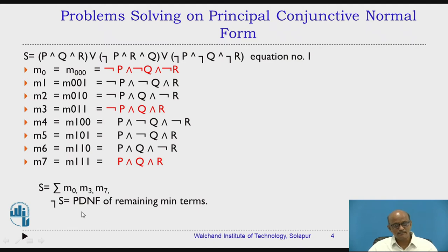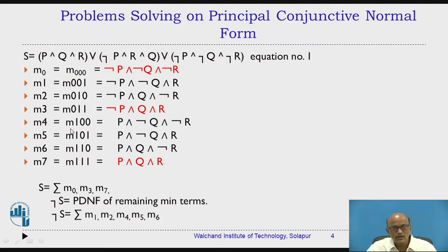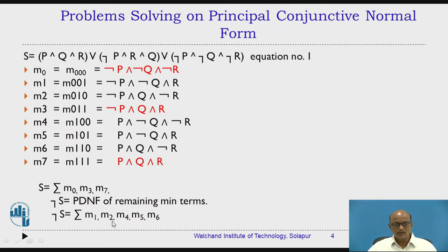Now negation S equals the PDNF of the remaining minterms. We take a summation of the remaining minterms: M1, M2 — M3 is already in S — then M4, M5, and M6. So apart from M0, M3, and M7, the remaining minterms M1, M2, M4, M5, and M6 will come in the summation. That is equal to negation S.